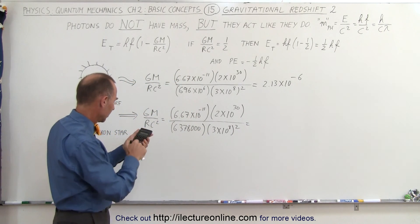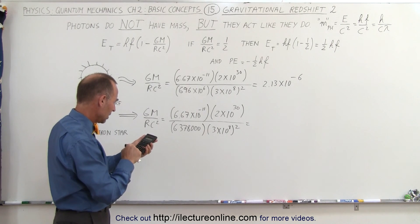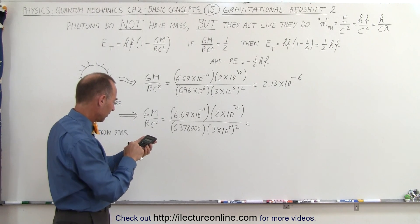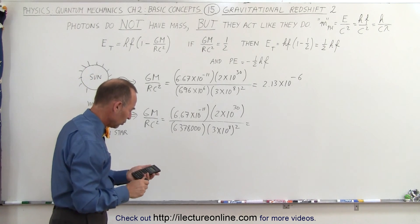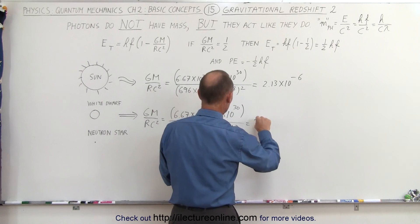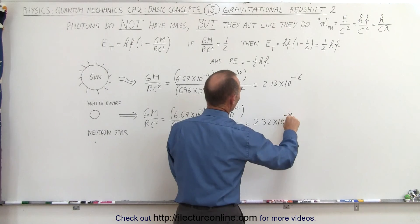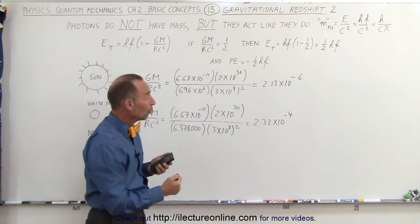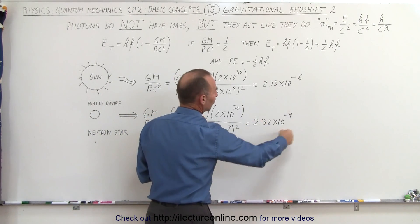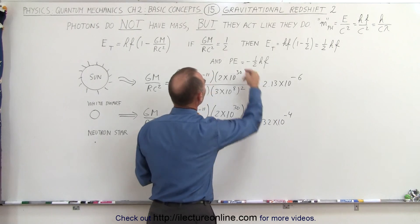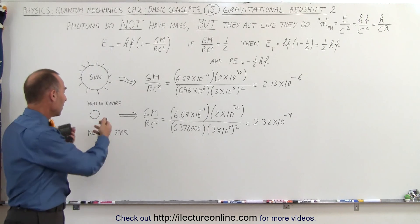6.67 E minus 11 times 2 E 30 divided by 637,800 divided by 3 E 8 squared equals 2.32 times 10 to the minus 4. Photons lose much more energy leaving a white dwarf compared to the sun, but that fraction is very tiny compared to one half, so photons can easily get away from white dwarfs with the mass of the sun.